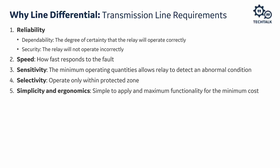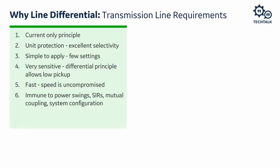The advantages of line differential are essentially the disadvantages of distance. Number one: it's a current-only principle — we don't need voltage, removing the voltage transformer component and increasing system reliability. Second, it's unit protection by definition, operating only for faults within the zone. It's very simple to apply with only a few settings. It's very sensitive, allowing low pickup. Fast speed is uncompromised, and it's immune to power swings, source impedance ratio, mutual coupling, and system configurations.